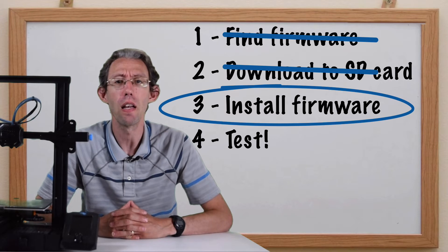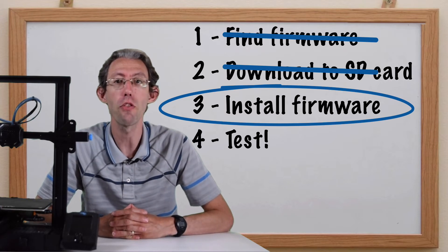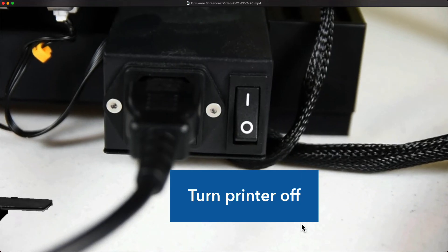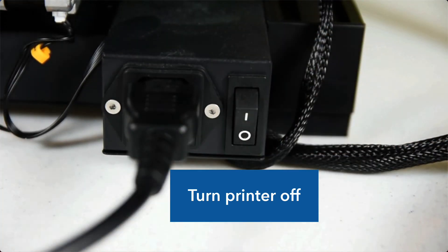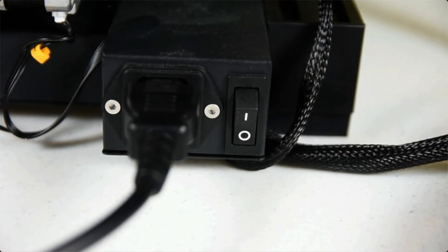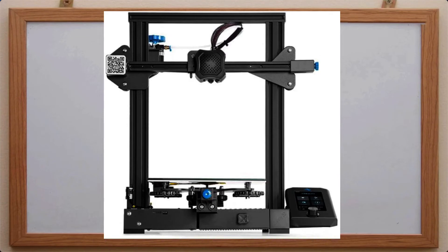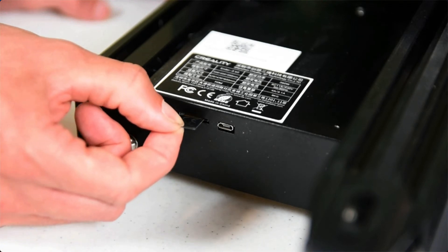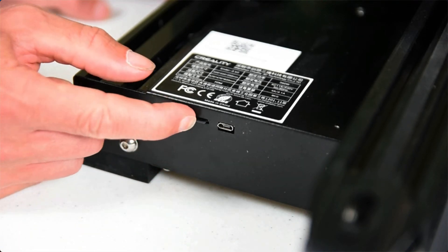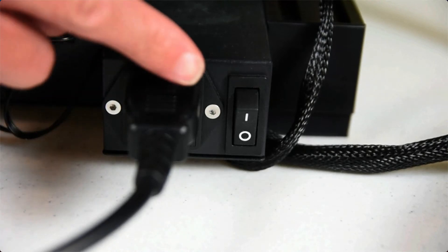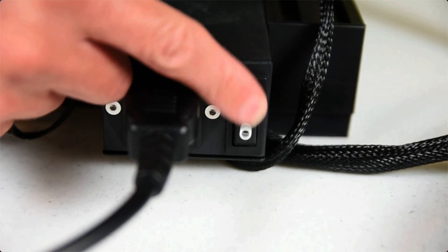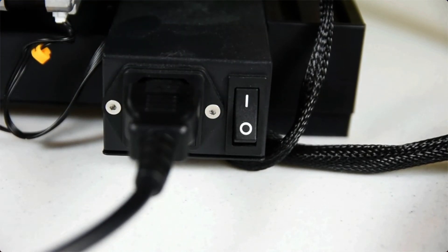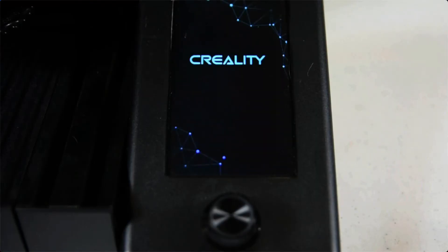Step 3: Install the firmware on the 3D printer. First, make sure your 3D printer is turned off. Next, insert the SD card that has the firmware file on it into the SD card slot on your 3D printer. Then turn your 3D printer back on. Look at your screen and you will see your firmware installing.